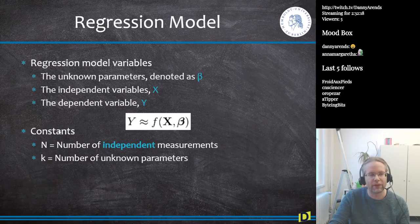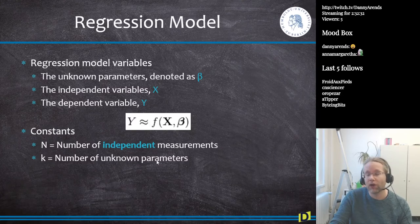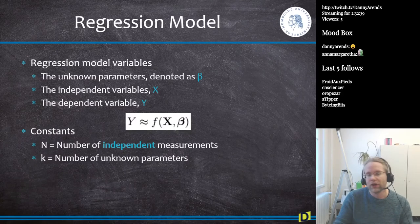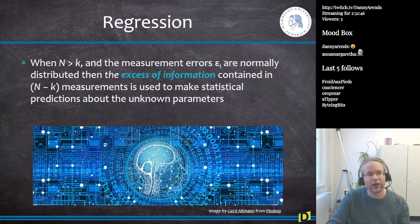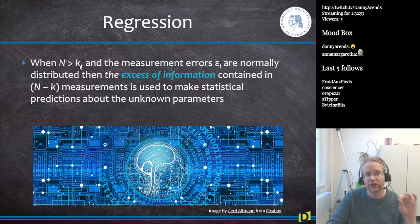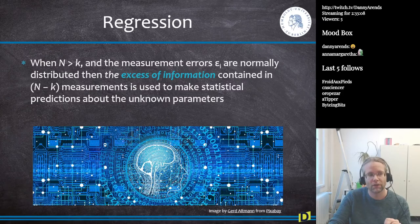Within the regression model, there are two constants people rarely mention. N is the number of independent measurements — if we have 100 mice, n is 100. K is the number of unknown parameters — in our case, two: food intake and exercise. The power of a regression model comes from having n larger than k, called the excess of information. N minus k tells us how much information we have to base our predictions on.